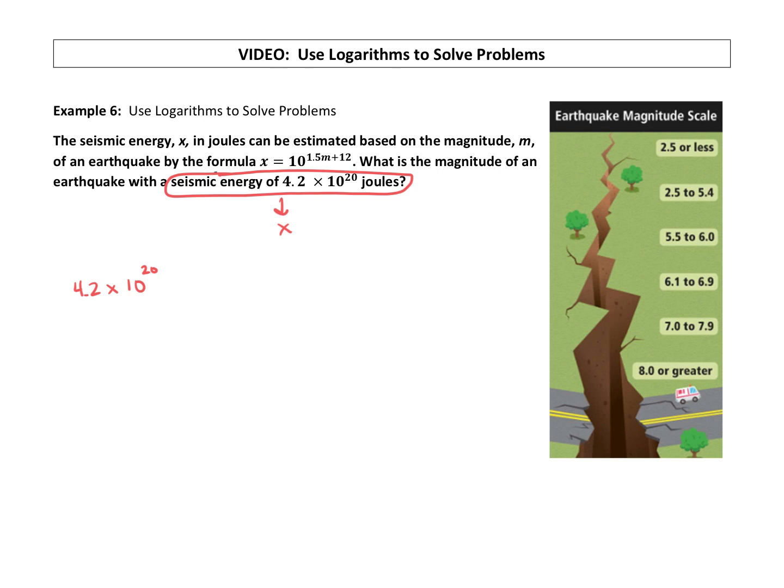So scientific notation is a shortcut. It's a shortcut way to write really big numbers or really small numbers that would have like a decimal and a bunch of zeros and then like a 4 and a 2.